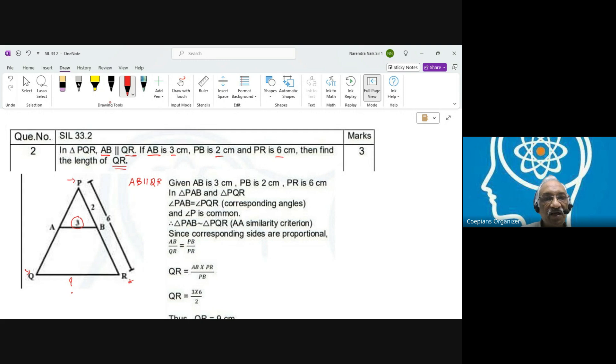Now if we compare these two triangles, triangle PAB and PQR, the two angles corresponding: angle PAB, let's say this particular angle is theta, then obviously this angle will also become theta because it's a corresponding angle. This particular angle P is common. Say this particular angle is alpha, so alpha is also common.